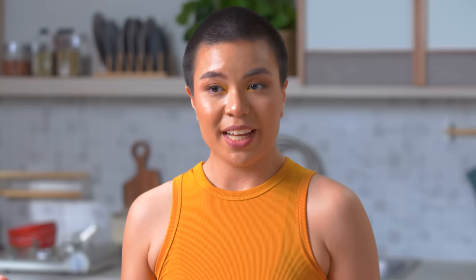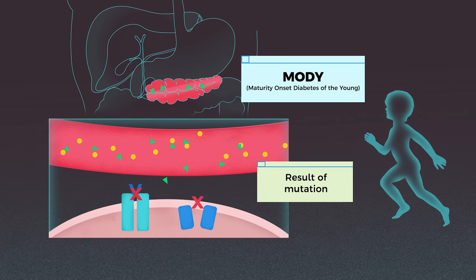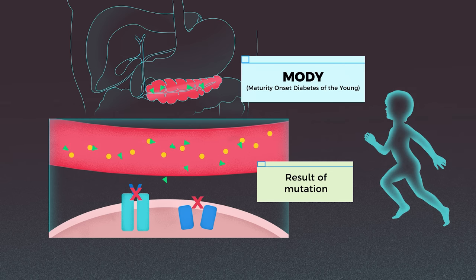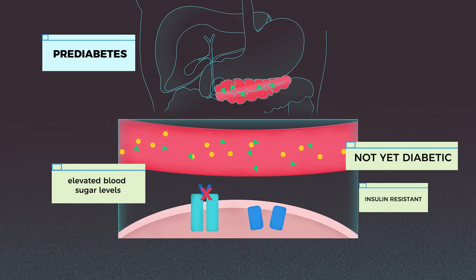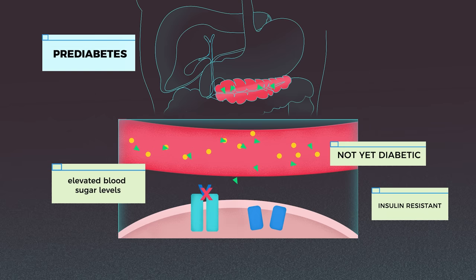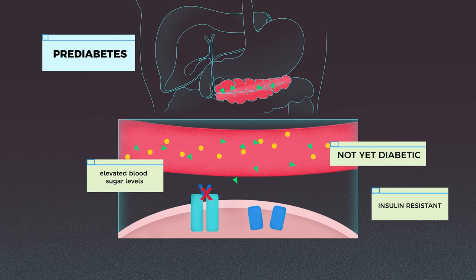MODY, on the other hand, is a mutation in your gene which sort of acts like type 2 diabetes but in the younger generations, and this is more likely to happen if you do have somebody in your family who has it as well. Then you have prediabetes — so prediabetes is when you're not really diabetic, but your body already exhibits insulin resistance and you do have elevated blood sugar levels. Oftentimes, insulin resistance that keeps on growing over time and not addressed will develop into type 2 diabetes.